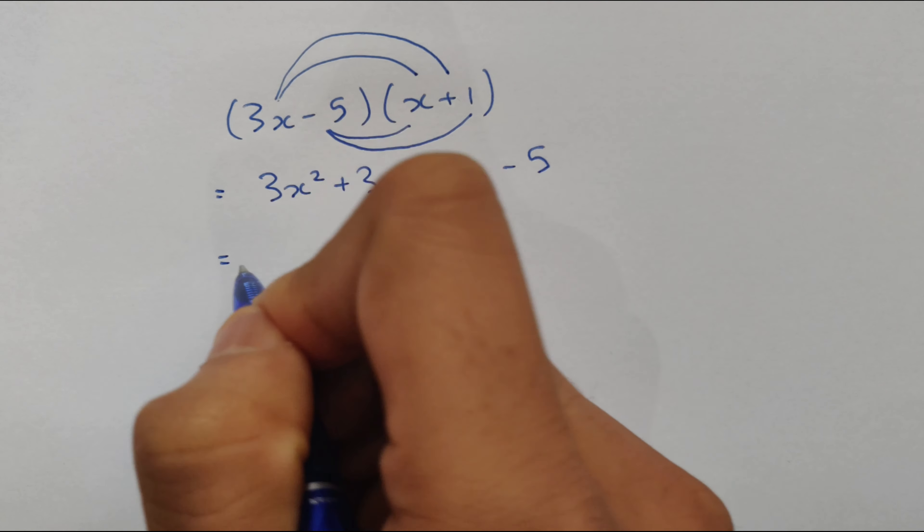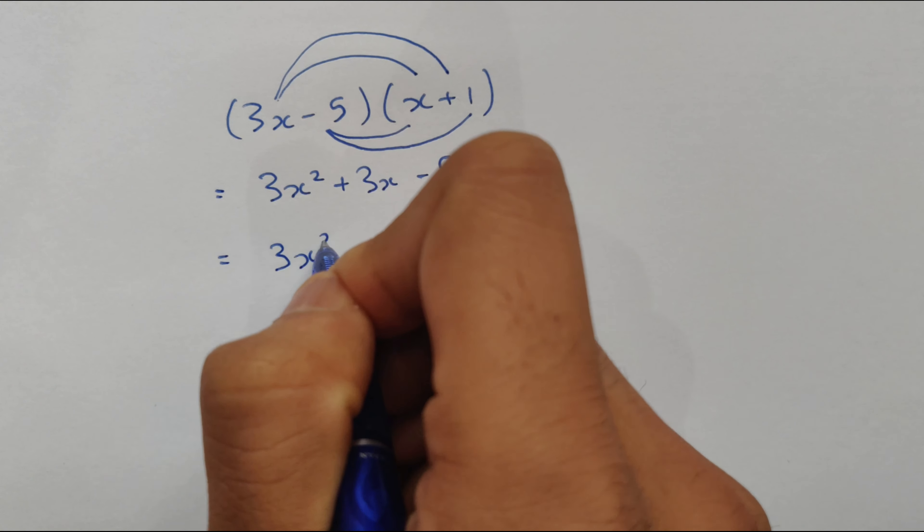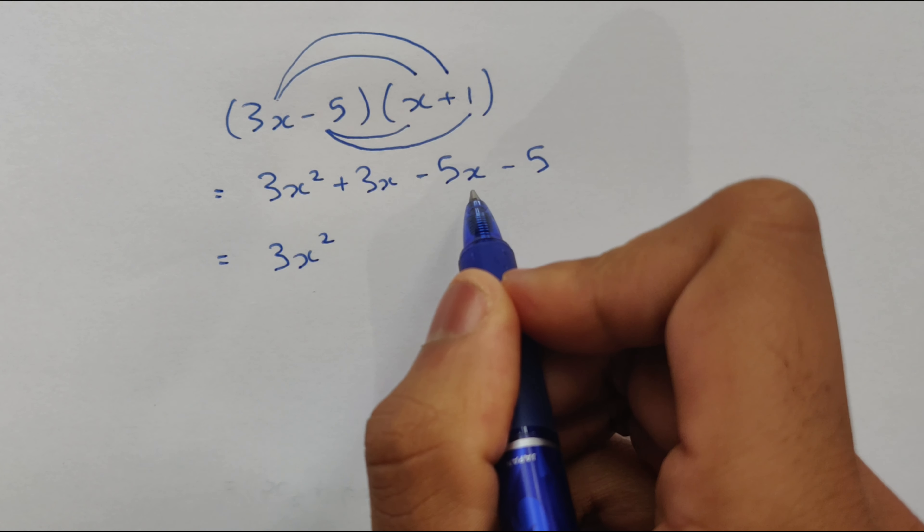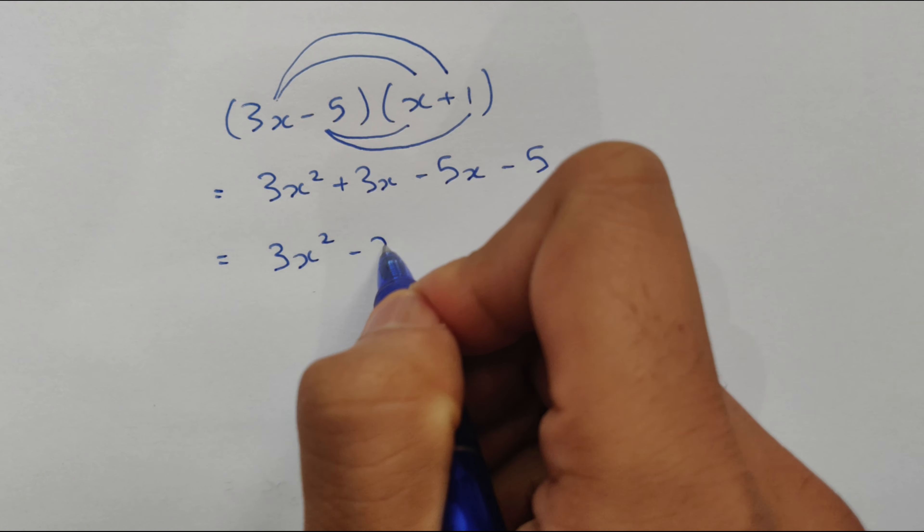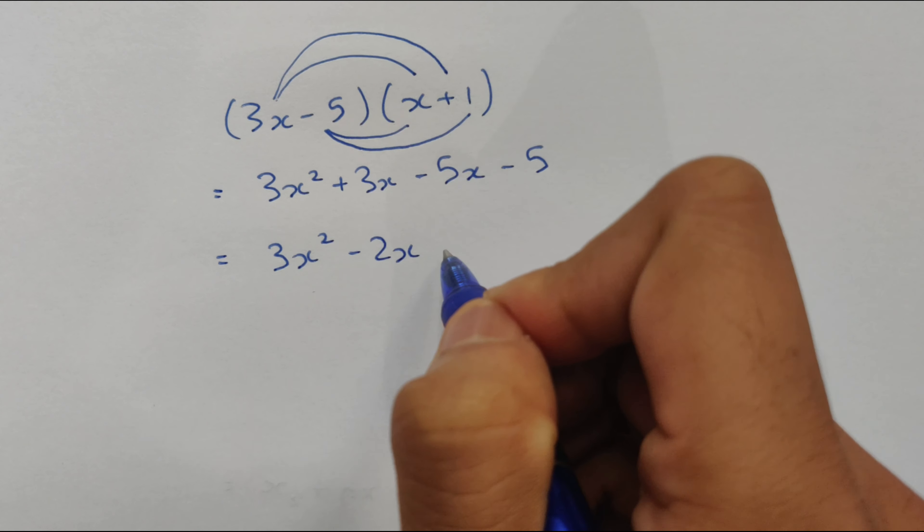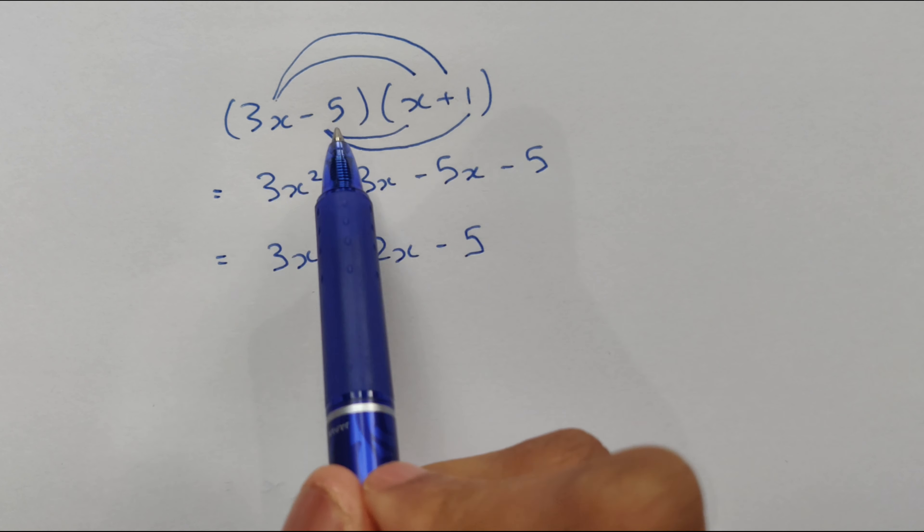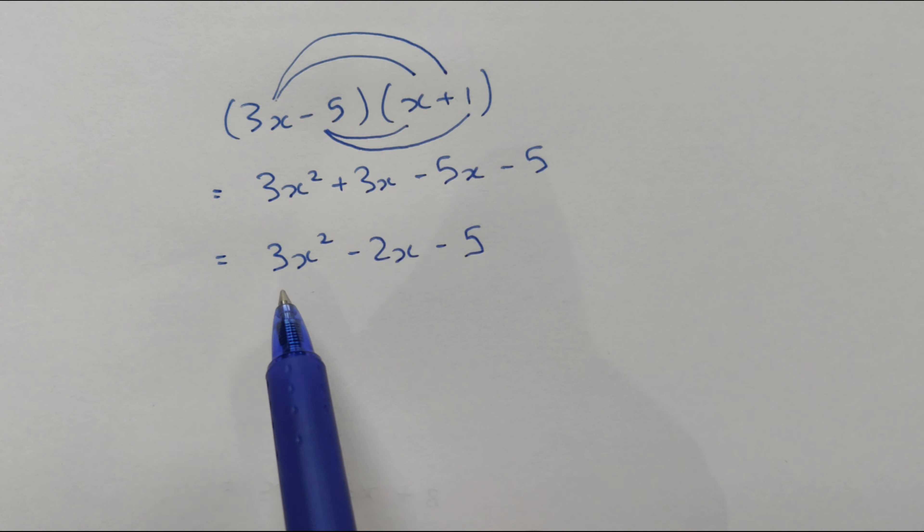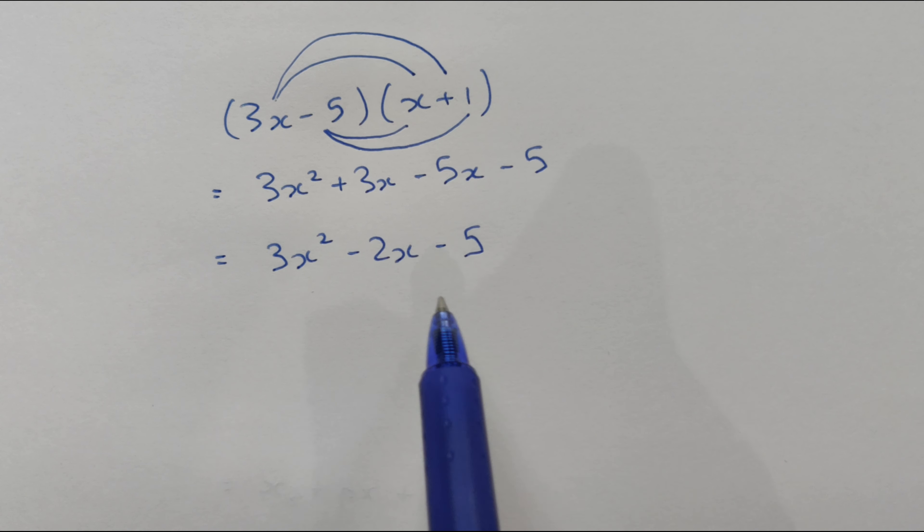So, now we can simplify this. We get 3x squared. So, plus 3x minus 5x is minus 2x. Then we have minus 5 over here. So, expanding 3x minus 5, x plus 1, we get 3x squared minus 2x minus 5.